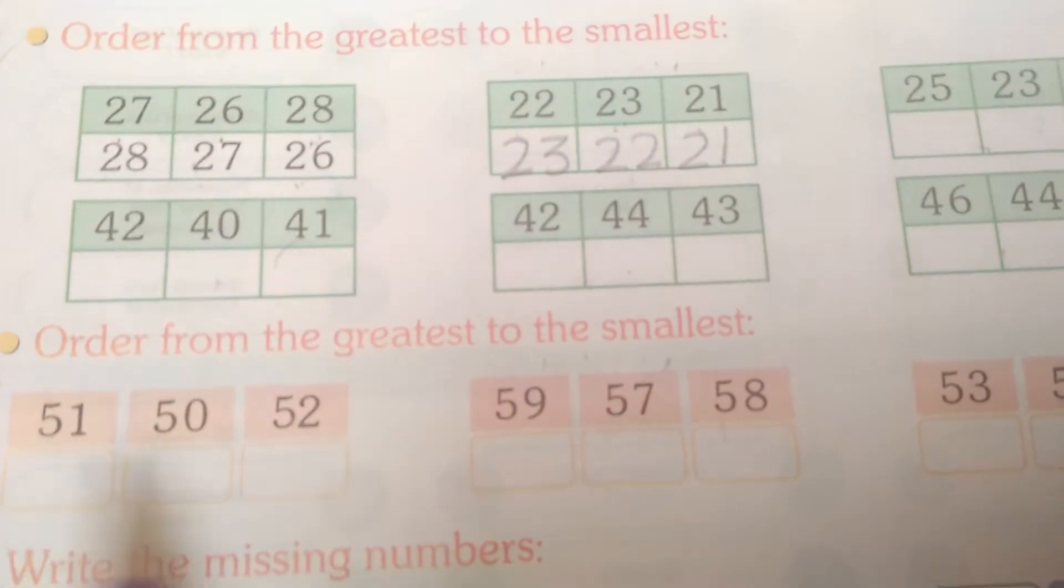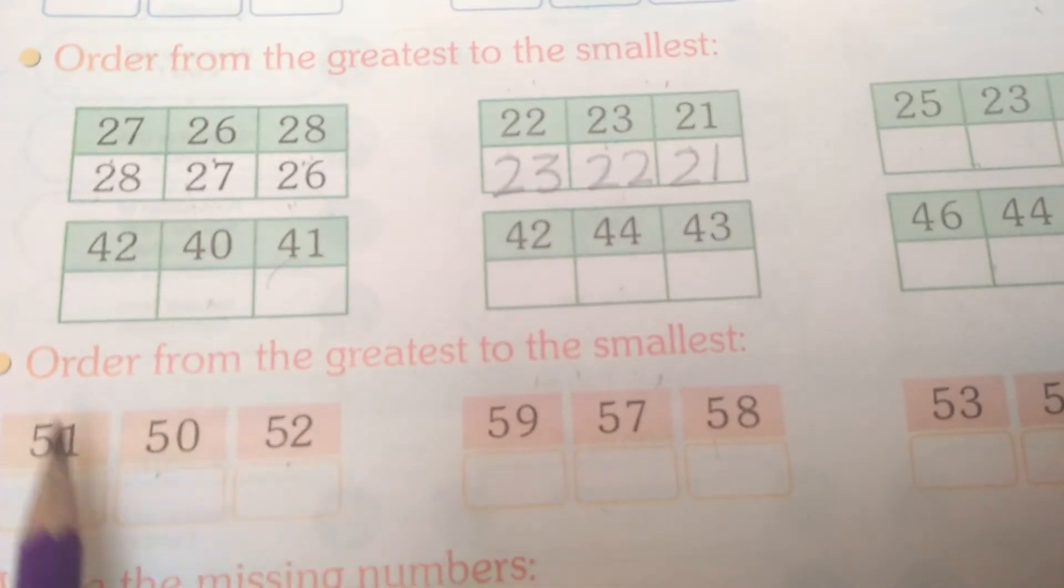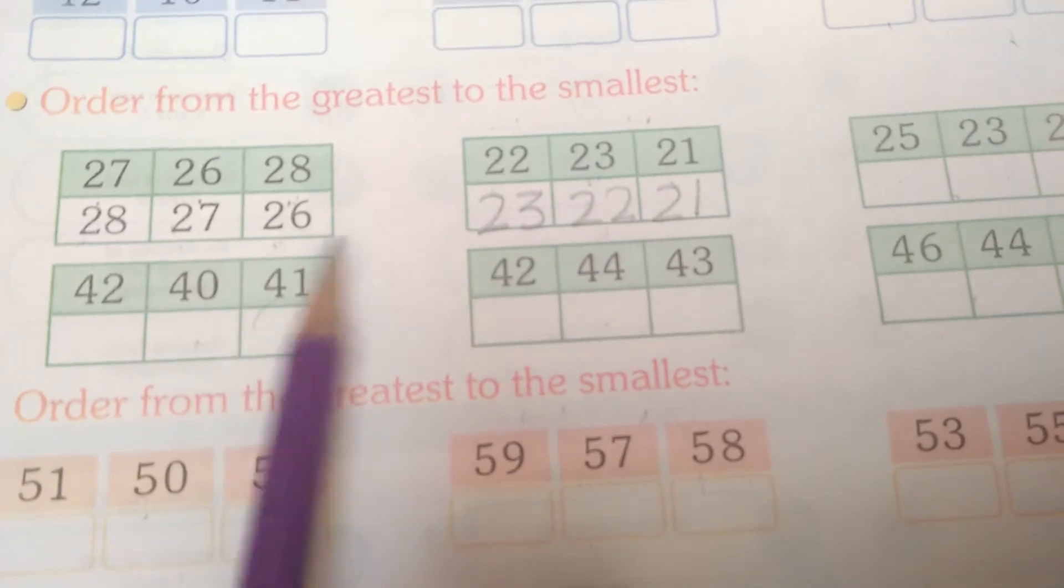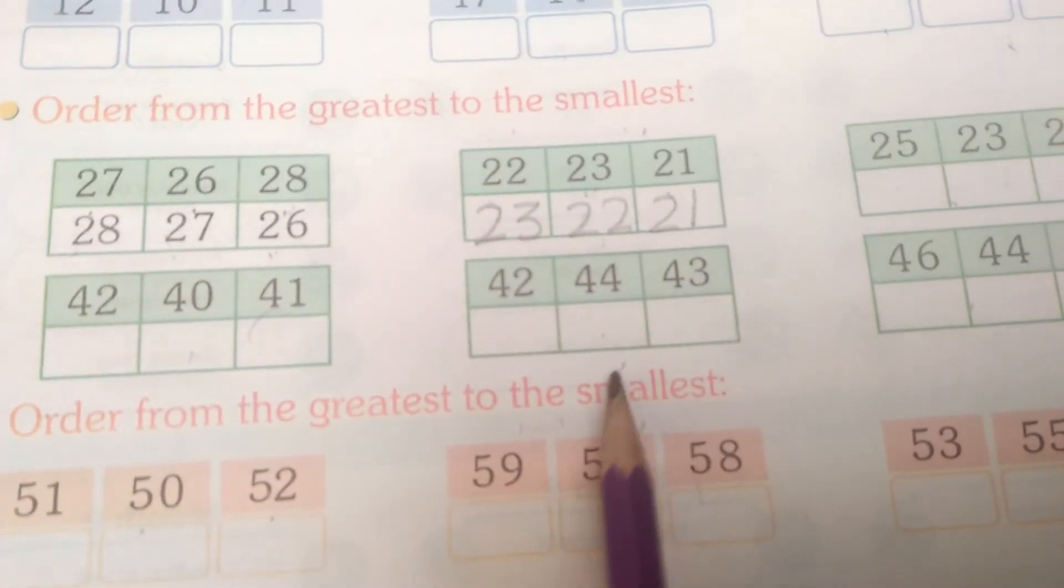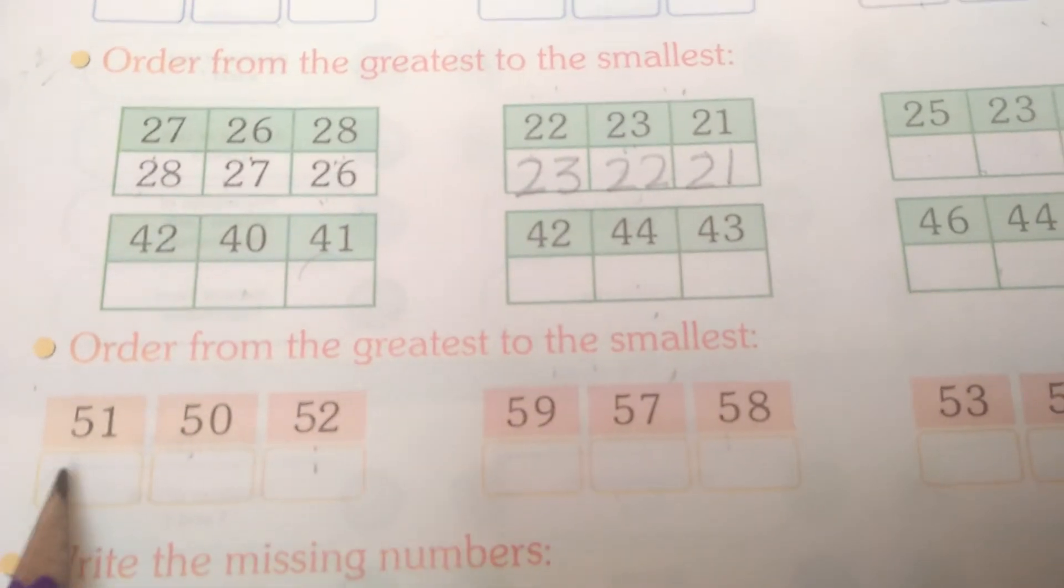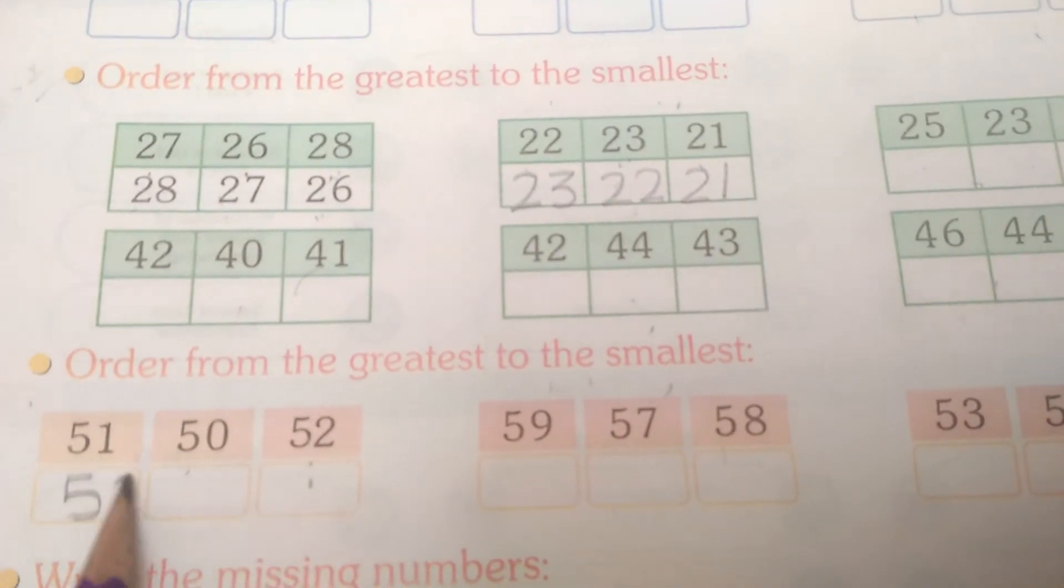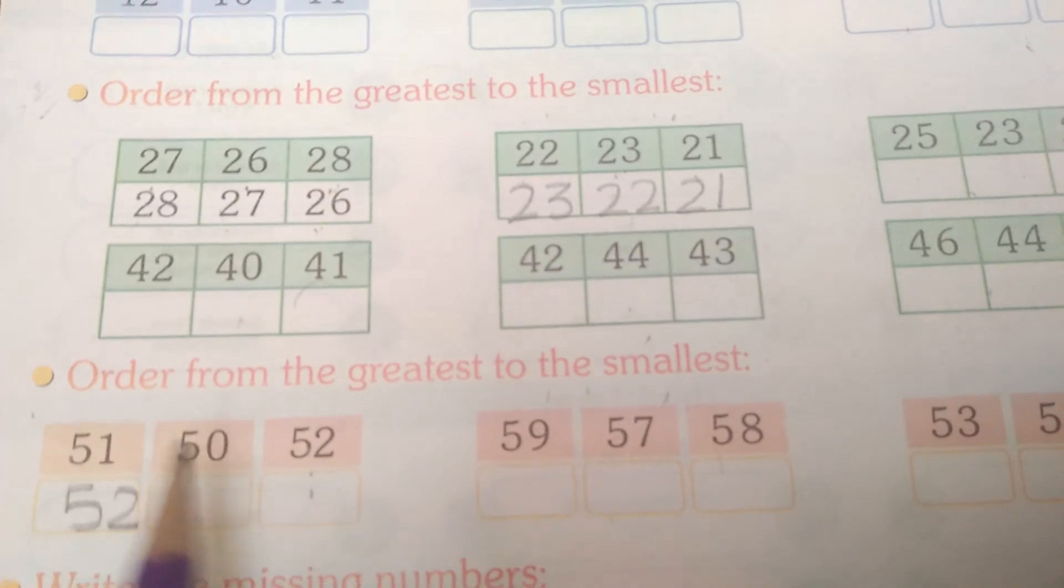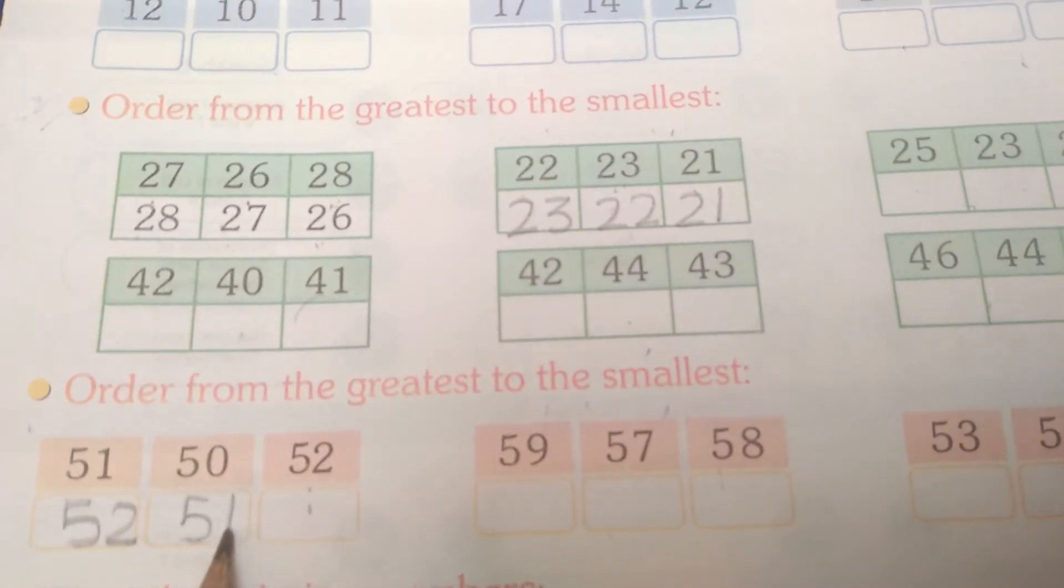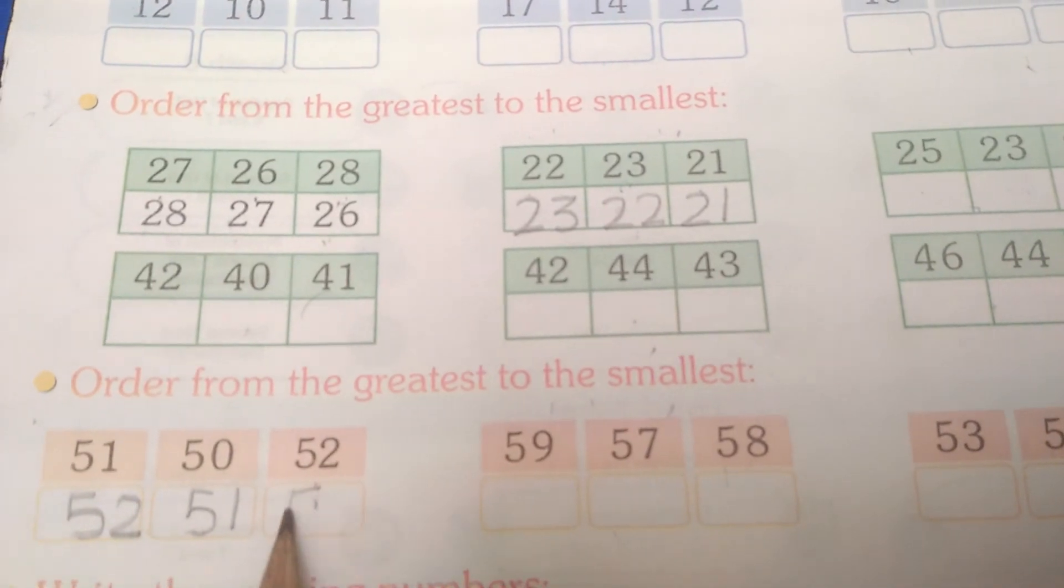The question is 51, 50, 52. This is also what you have done on top, greatest to smallest. This is the biggest number which is 52. What will you write? 52. Now which one from that is 51? What will you write? 51. Here what will you write? 50.